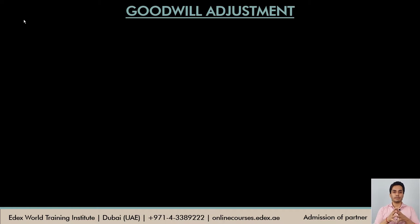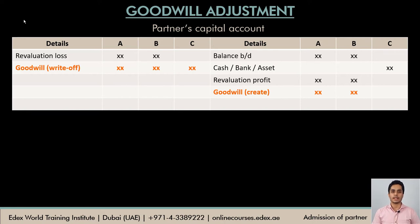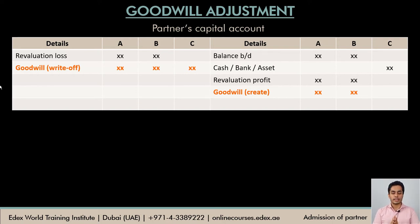Let's understand the effect of these entries in the capital account, as the paper will usually require you to prepare the capital account. The goodwill creation entry appears as a credit in A and B's capital account only. On the debit side, goodwill is written off across all partners' capital accounts in the new ratio. These entries ensure goodwill is properly adjusted in the capital accounts. Now let's solve a question — we'll prepare the revaluation account, capital account, and the revised statement of financial position after the new partner's admission.